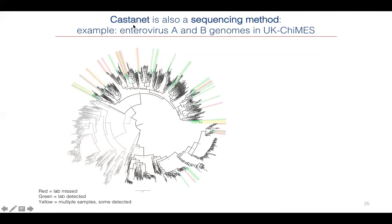Castanet is similarly to VSeq also a sequencing method. As an example, we could pull out enterovirus A and B genomes from the UK CHIMES cohort, plotted on a tree: the red ones are those the lab didn't detect, the green ones are those the lab did detect, and the yellow ones are where the lab detected some but not all within a cluster — we were able to find the others that looked quite possibly like a transmission cluster.